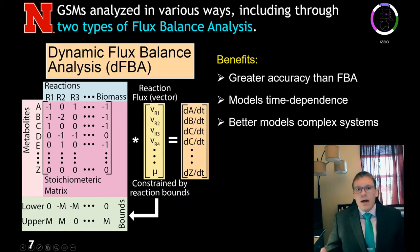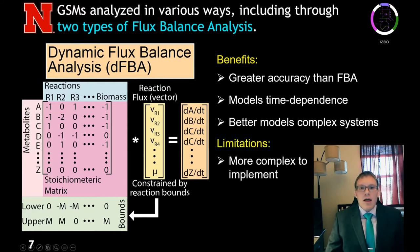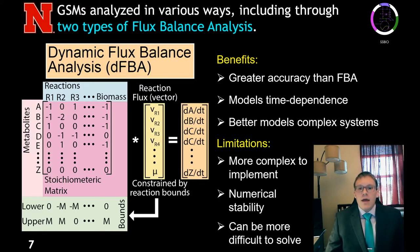On the other hand, dynamic flux balance analysis involves solving a series of interrelated ordinary differential equations, where we're solving for concentration over time. It gives greater accuracy potentially than standard FBA. The models can be time-dependent and, at least in our opinion, it better models complex systems. The limitation is that DFBA is more complex to implement, it can have numerical stability issues, which we'll talk about in a bit, and it can be more difficult to solve.